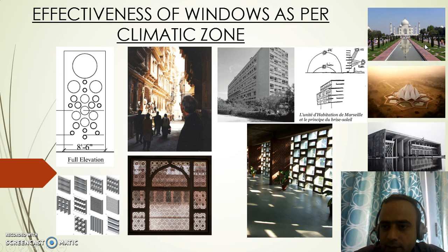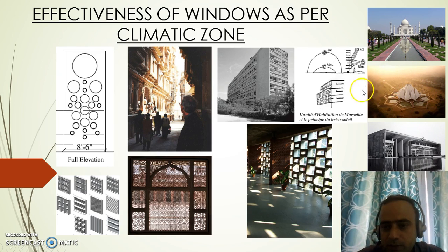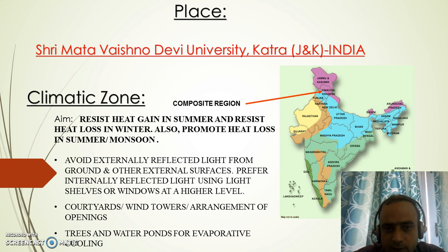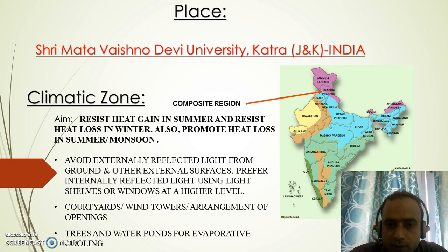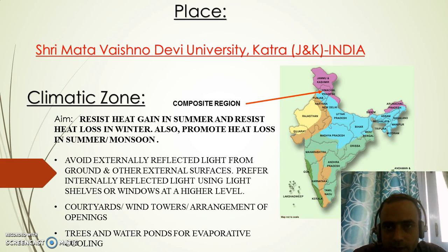Addition of water features in dry and composite climates can change window functions altogether and improve the effectiveness of window openings for indoor comfort. As far as this campus is concerned — Shri Mata Vaishno Devi University, located in the Katra part of Jammu and Kashmir, India — the climatic zone is essentially a composite climate zone.